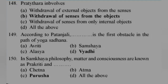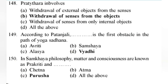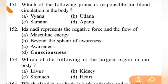Pratyahara involves — right answer is B — withdrawal of senses from objects. Next: according to Patanjali, the first obstacle in the path of Yoga Sadhana is — right answer is D — Vyadhi — disease. Next: in Sankhya philosophy, matter and consciousness are known as Prakriti and Purusha. Next: which Prana is responsible for blood circulation in the body? Right answer is A — Vyana Vayu — very important.